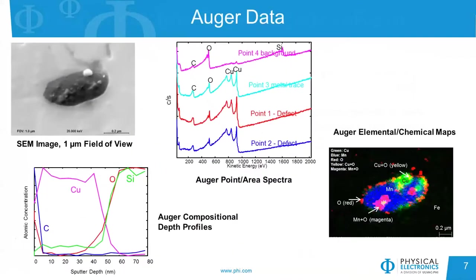Here's the type of Auger data that you obtain on the instrument. In the upper left, we see an SEM image with a one micron field of view, so a very small feature. We can put points or areas on this area of interest and collect Auger data. Here we see four different points that were analyzed, showing different elements in the different point locations. We can map out the distribution of those elements found in the survey spectra. In the lower right we have an Auger map showing a variety of different elements located on this inclusion. And in the lower left, we see we can add the argon ion beam to do a compositional depth profile, in this case looking at a copper thin film on top of a silicon oxide.